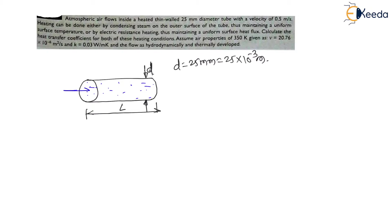Air is flowing through this tube with a velocity of 0.5 m/s. Heating can be done either by condensing steam on the outer surface of the tube. Outside this tube there is steam, which may get condensed to heat the tube.